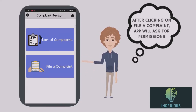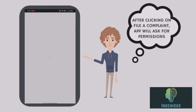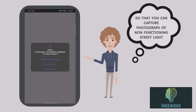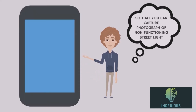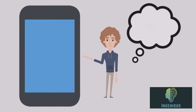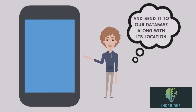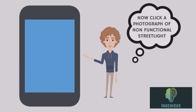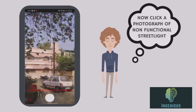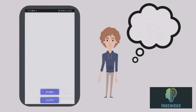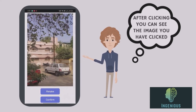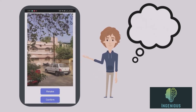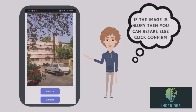After clicking on file a complaint, the app will ask for permissions so that you can capture a photograph of the non-functioning street light and send it to our database along with its location. Now click a photograph of the non-functional street light. After clicking, you can see the image. If it's blurry, you can retake — else click confirm.